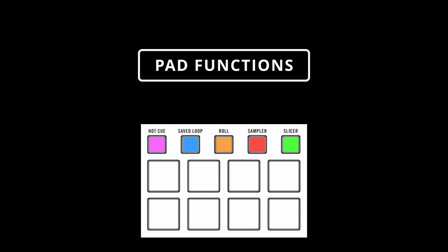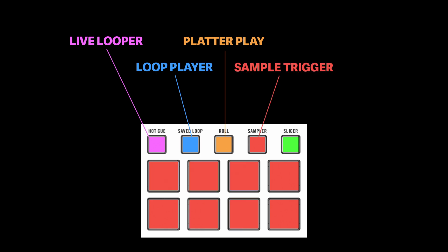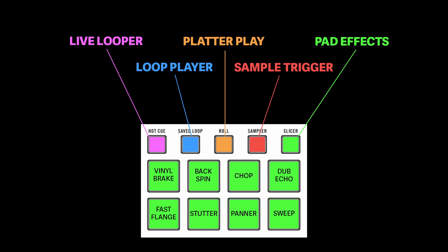Let's break down the pad functions in Scratch Attach. There are five pad modes, selected using the five smaller pads above the main trigger pads, from left to right: Live Looper, Loop Player, Platter Play, Sample Trigger, and Pad Effects. We'll go out of order, starting with the basics and building toward the more advanced features.